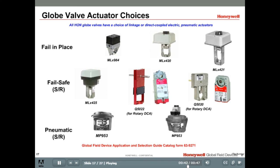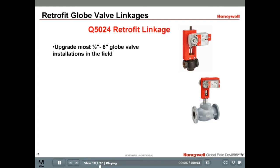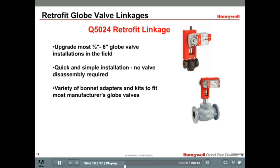An online version of the catalog is also available on the customer.honeywell.com website under support and resources. Honeywell's newest linkage is the Q5024. This retrofit linkage fits most manufacturers globe valves in the field from one half to six inches with no valve disassembly required. This linkage is easy to install and the wide variety of color combinations available allows it to fit almost all globe valves. Single or dual mount actuator linkage options are available to offer a torque from 44 inch pounds to 600 inch pounds.